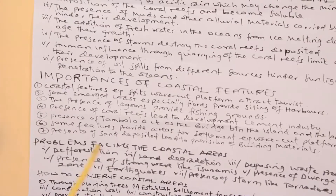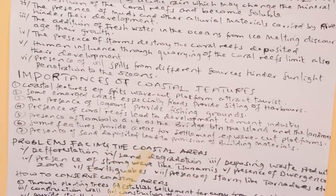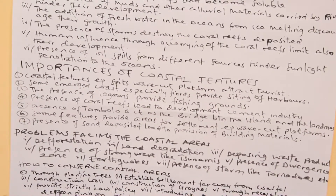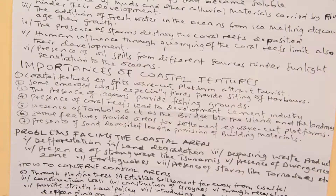Another importance is that some coastal features provide areas for settlement. For example, wave-cut platforms. Most people can be settled in those areas. Another importance is that areas of sand deposition lead to the provision of building materials, as people can take sand for use in different purposes, for example, building.